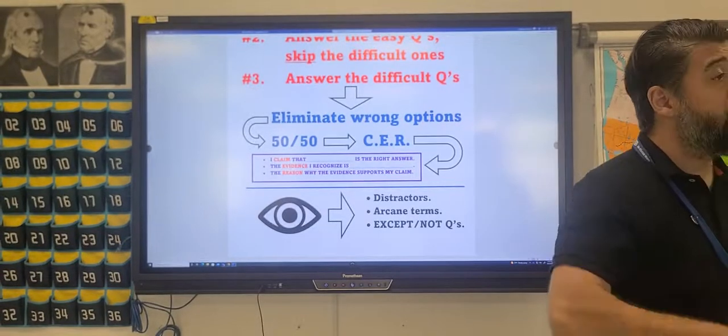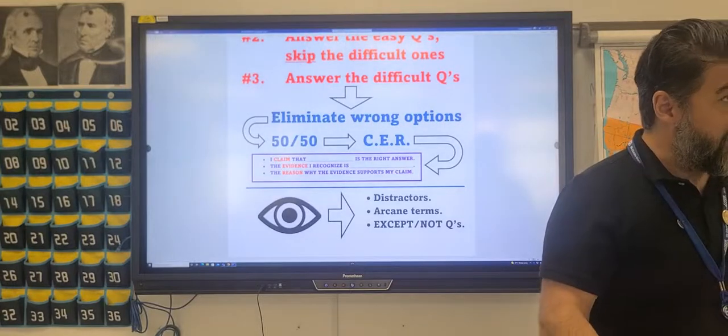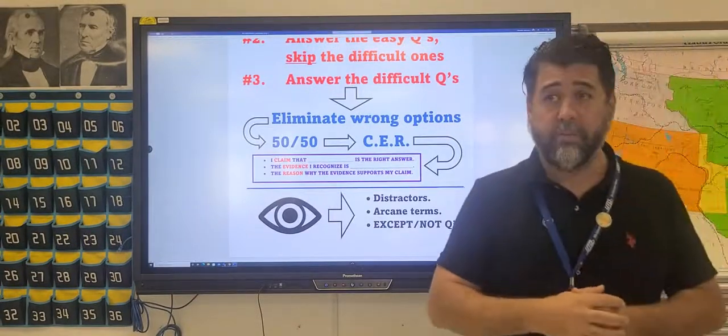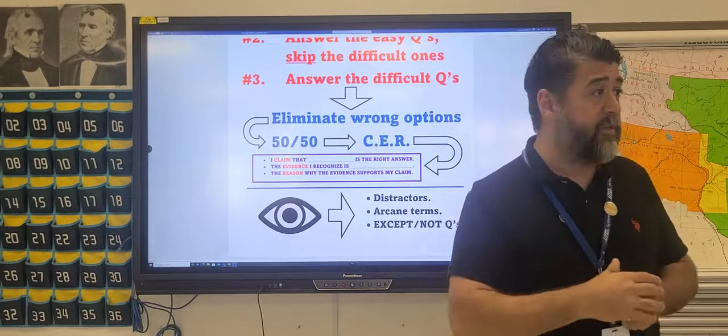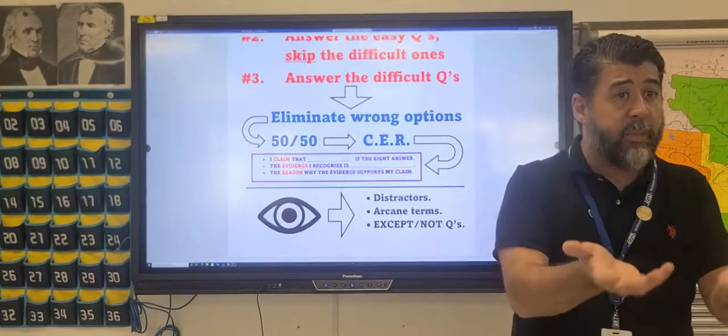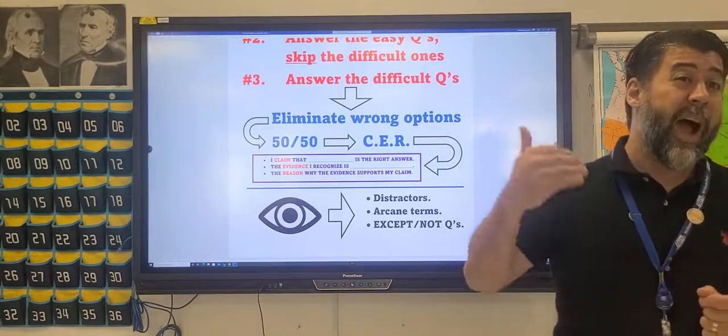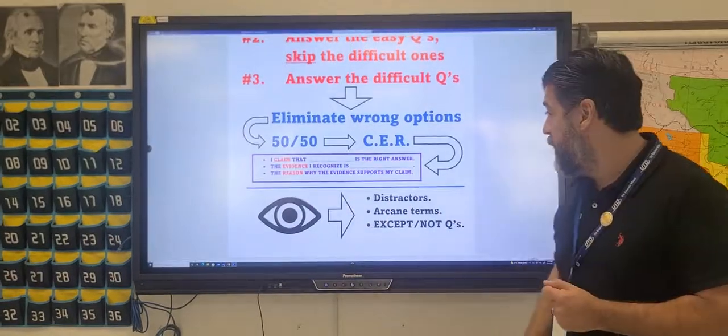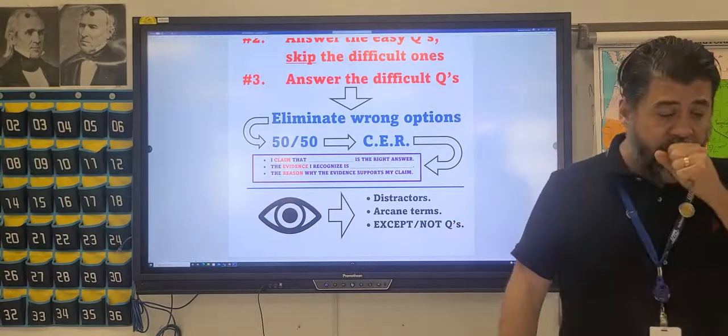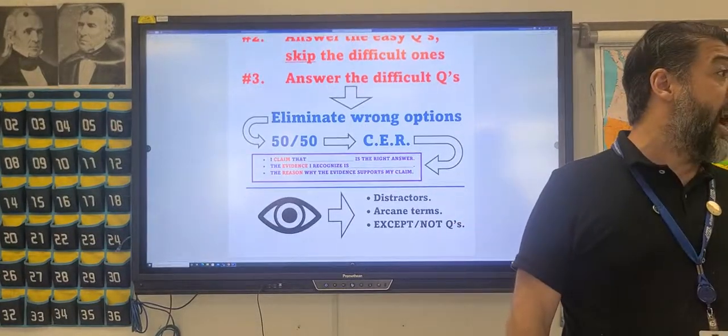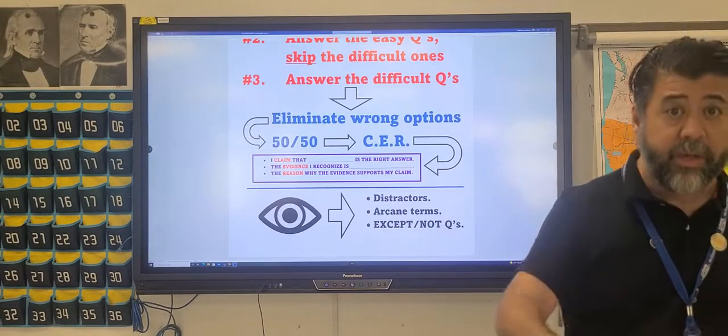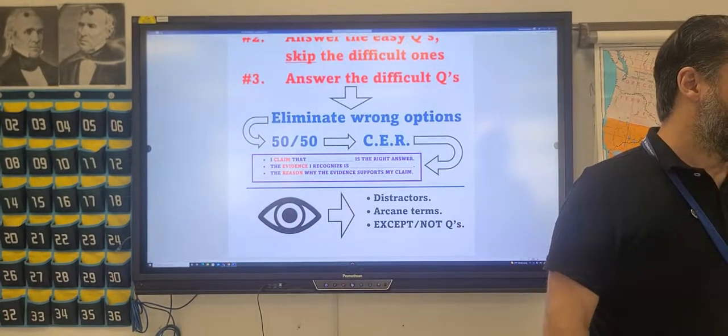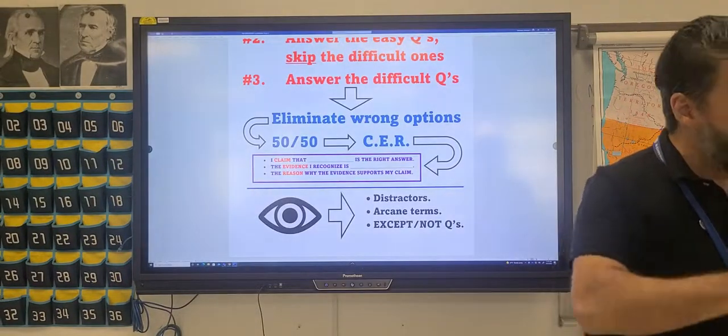And so what are we getting at? If we approach multiple choice exams carefully, do the three-pass strategy, and when we approach difficult questions, we use process of elimination, which may lead us to a 50-50 dilemma, and when we're in a 50-50 dilemma, we ask those questions about the two options left, we have a much higher chance of getting that question right, and never ever leave it blank. So before we finish though, let's talk about a couple of things I need you to keep your eyes open for. Do trick questions exist? Absolutely.